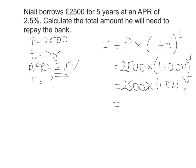We do 2,500 multiplied by 1.025 to the power of 5 on the calculator. The figure that comes out is 2,828.52 — and because we're dealing with money, we always round to two decimal places unless told otherwise. So that's the total amount Niall will have paid back over the five years: €2,828.52. This is made up of the original £2,500 plus the extra interest added up over the five years.